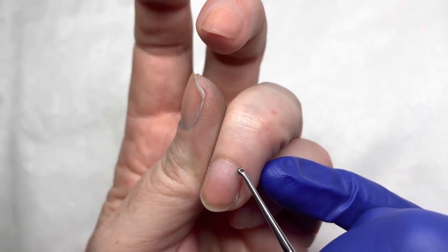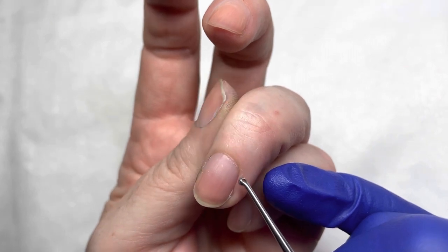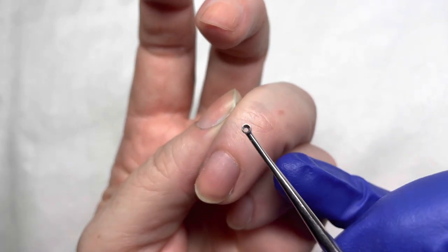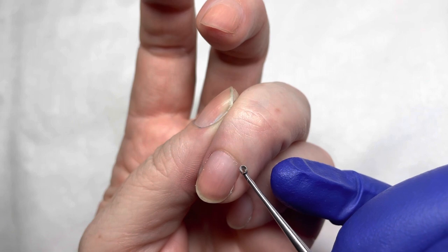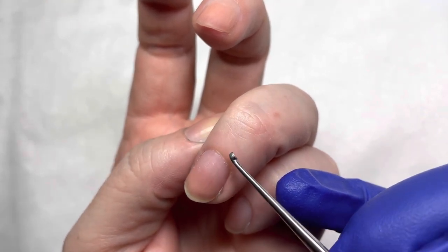This bit of skin back here that we oftentimes call cuticle is actually a keratinized proximal nail fold. That sounds really fancy because it's actually medical terminology.